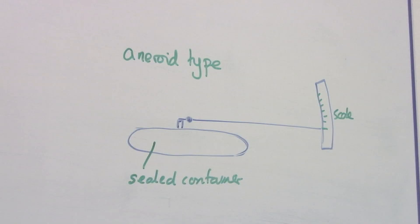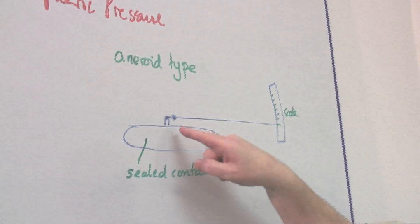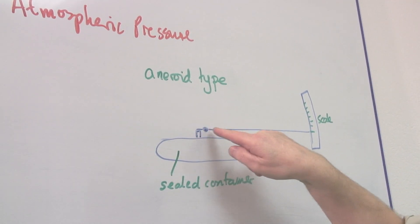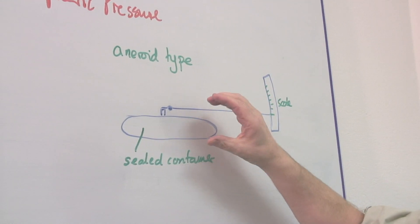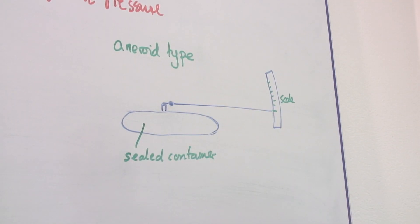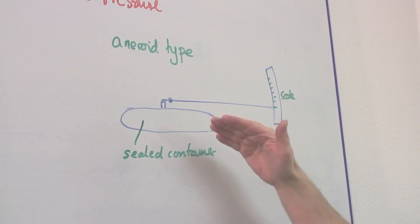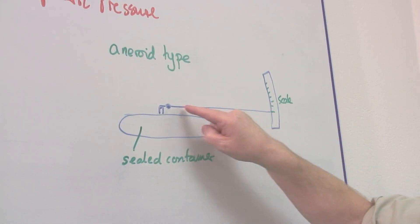The aneroid type barometer relies on having a sealed container, on which there is a pointer attached. And as atmospheric pressure increases, the container is compressed, and this pointer moves.